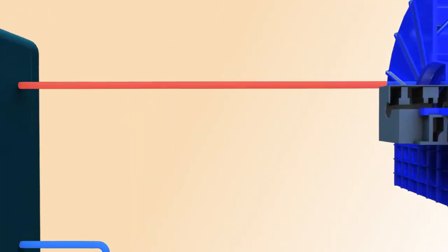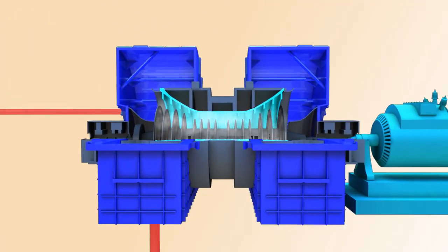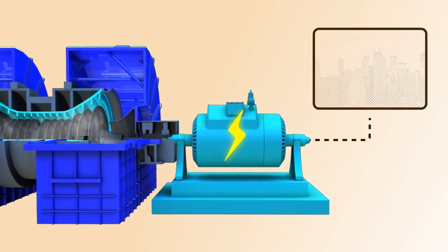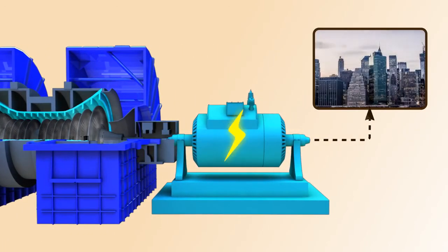The steam is then transported to a large turbine where it pushes the blades and turns the shaft connected to a generator. This causes electricity to be generated, which is sent across transmission lines to towns and cities.